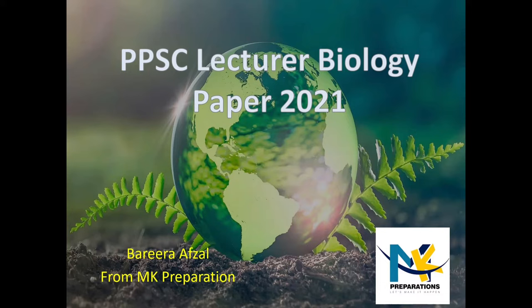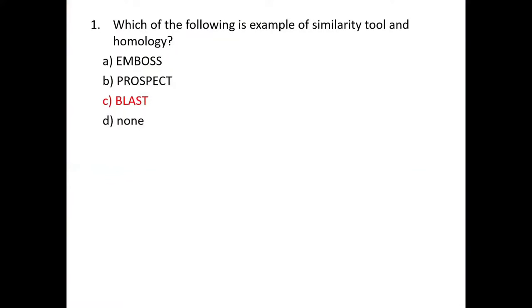Bismillahirrahmanirrahim, assalamu alaikum. I am Barira Afzal from MK Preparations. Today we will discuss the PPSC lecture biology male and female paper 2021. Number one: which of the following is an example of similarity tool and homology? BLAST finds regions of local similarity between sequences and compares nucleotides, so C is the correct answer.